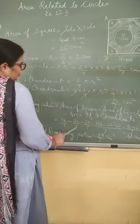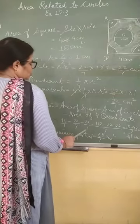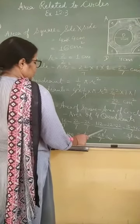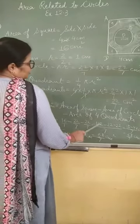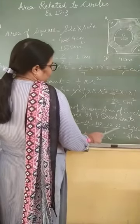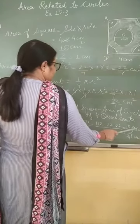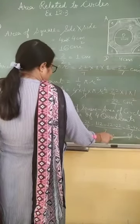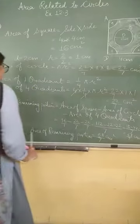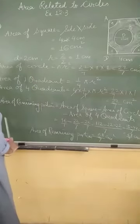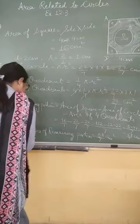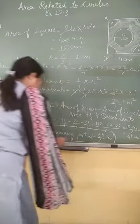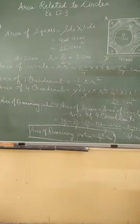That is 16 minus 22 by 7 minus 22 by 7. Taking LCM, we will multiply by 7 into 16, that is 112, minus 22, minus 22, that is 112 minus 44 by 7, that is 68 by 7 centimeter square. So, the area of remaining portion is 68 upon 7 centimeter square.